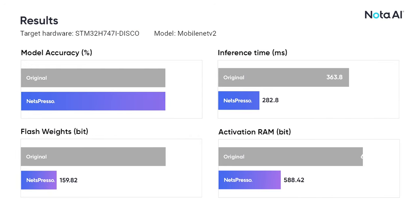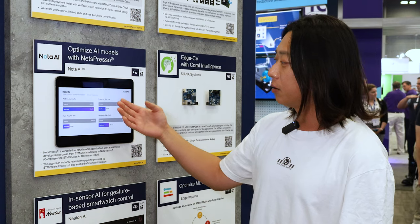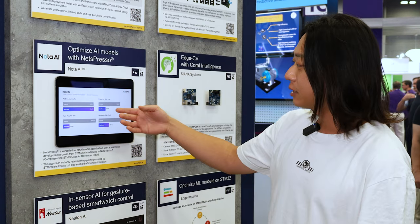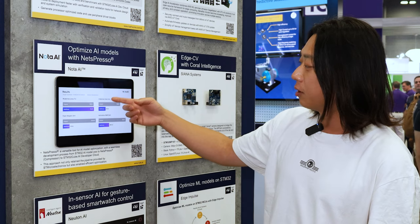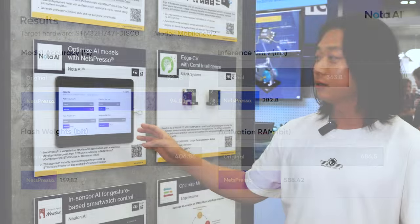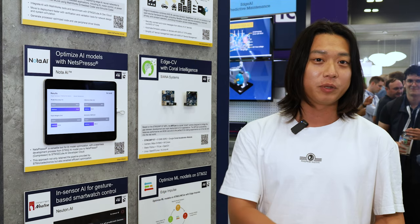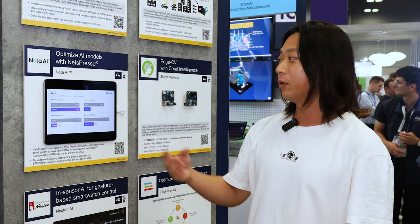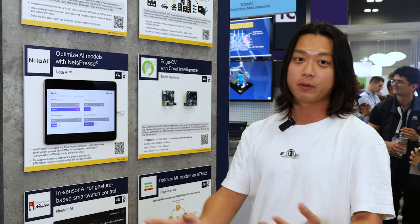Let me show you one example of our integration results. We are using MobileNet V2, which is a classification model, on the STM32H7 hardware. You can see that we almost didn't lose any accuracy, but the inference time improved from about 400 milliseconds down to 300 milliseconds. We are also providing sample codes and tutorials on our website and STMicro GitHub.